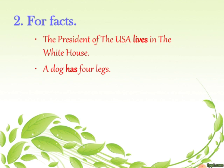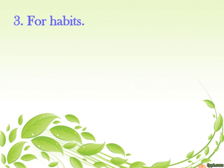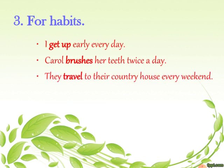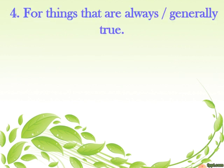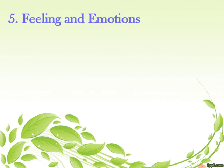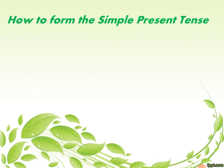Next, we use simple present tense for facts — for example: The president of USA lives in the White House; a dog has four legs; we come from Switzerland. We use it for habits — for example: I get up early every day; Carol brushes her teeth twice a day; they travel to their country house every weekend. For things that are always or generally true — for example: it rains a lot in winter; the Queen of England lives in Buckingham Palace; they speak English at work. Feelings and emotions: he cries; I like to sing.